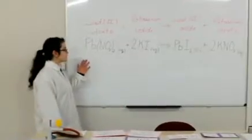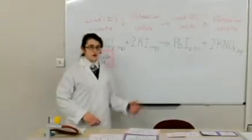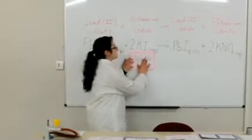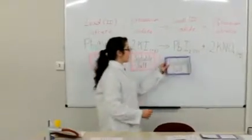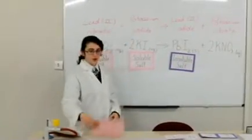As you can see, lead nitrate is a soluble salt and it reacts with another soluble salt which is potassium iodide. And these two form the insoluble salt which is lead iodide and the other soluble salt which is potassium nitrate.